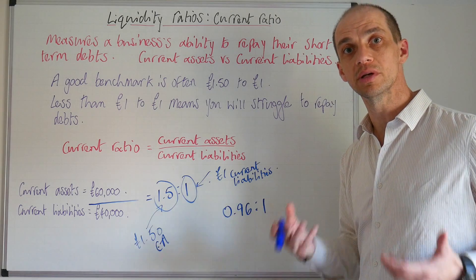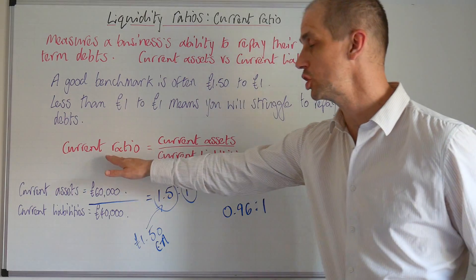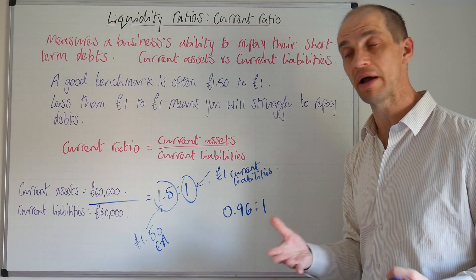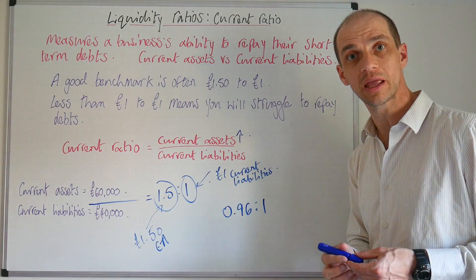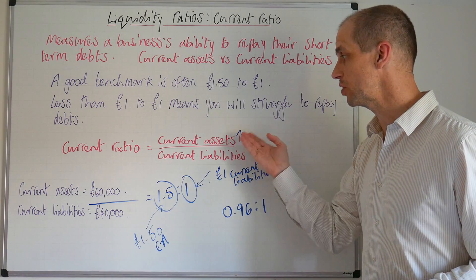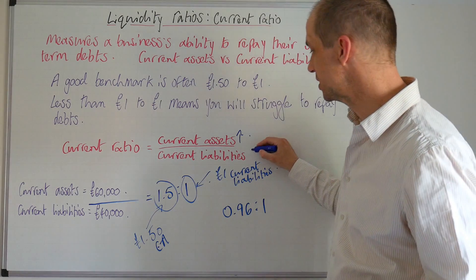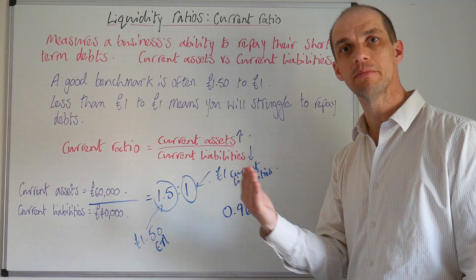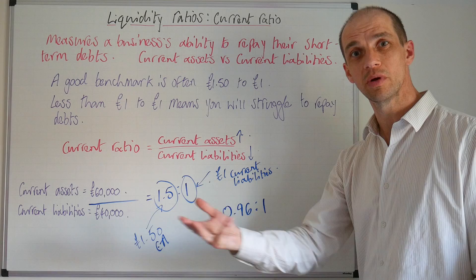You would need to suggest ways to correct that situation and improve their current ratio. Looking at the formula, firstly it could be about trying to boost your liquid assets — that is your cash, for instance — so boosting your current assets so that you actually have more liquid cash available. Meanwhile, you would want to try and decrease your current liabilities, such as decreasing borrowings in the form of overdrafts that need to be repaid within a short period of time.